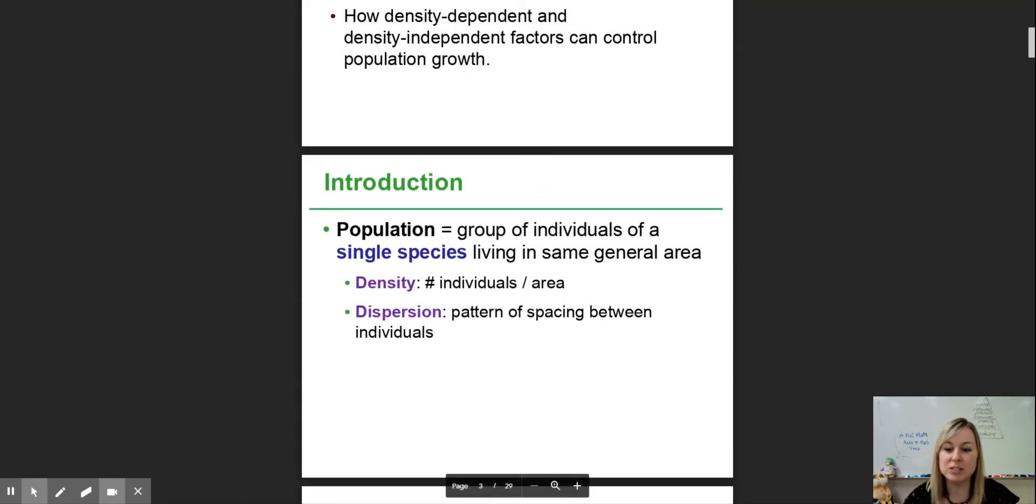First is defining a population. A population is a group of individuals that are all in the same place at the same time, and they are all members of the same species, so they are actively interbreeding and creating offspring. A population of zebra in sub-Saharan Africa is different than a population of zebra up in the northern regions because they don't interbreed. The changes that affect one population are not going to affect the other.